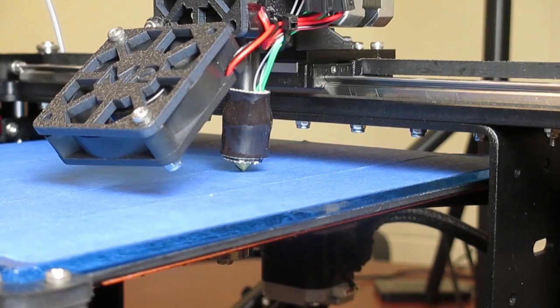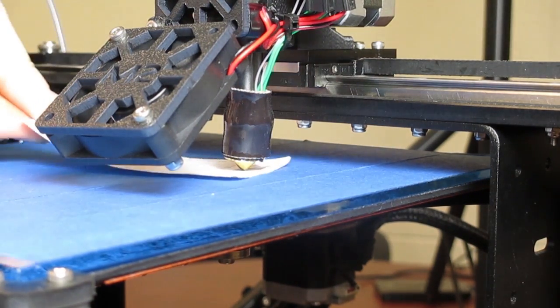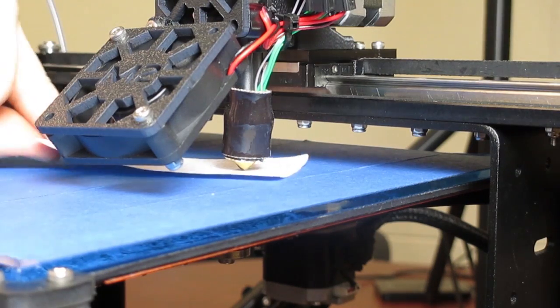If you've correctly adjusted your Z offset, when you home the Z axis, a business card should snugly slide underneath the nozzle. That means you are ready to print.